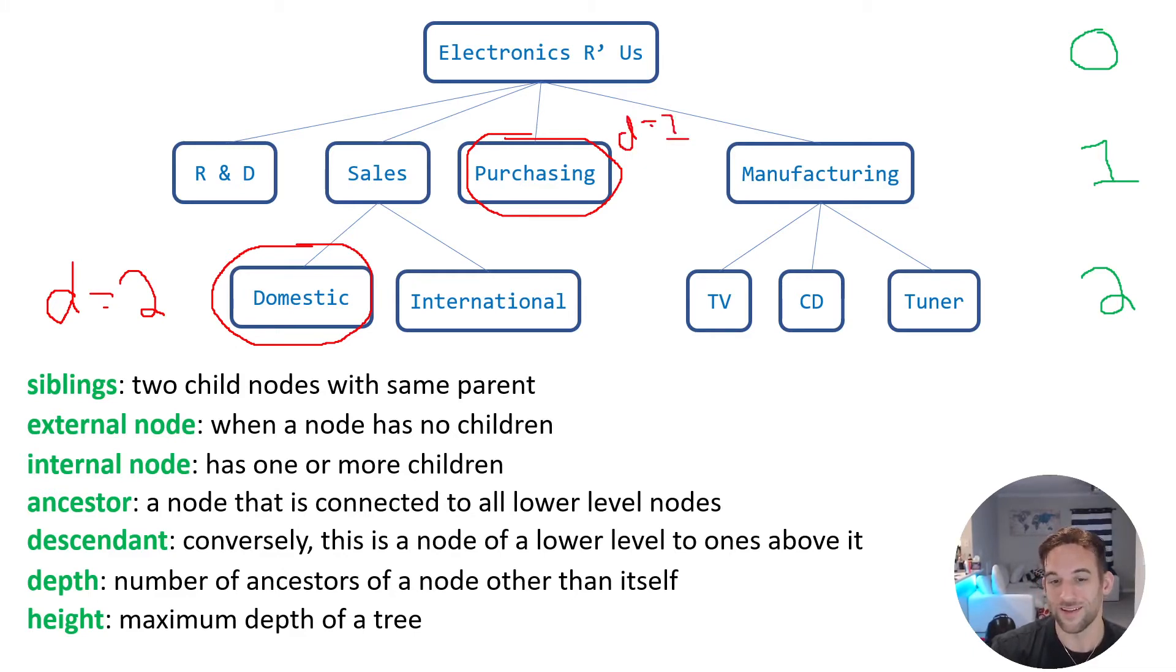Now when we say the height of a tree, this is just the maximum depth of a tree. So we kind of already calculated this. If we look at domestic again, its depth is two. Well, there are no other, there's no third level that has nodes on it. So we just know that the height of this tree is also equal to two. I'll kind of go with this again in another slide. But these are basic terminologies that you need to know. Let's move on to the next slide.